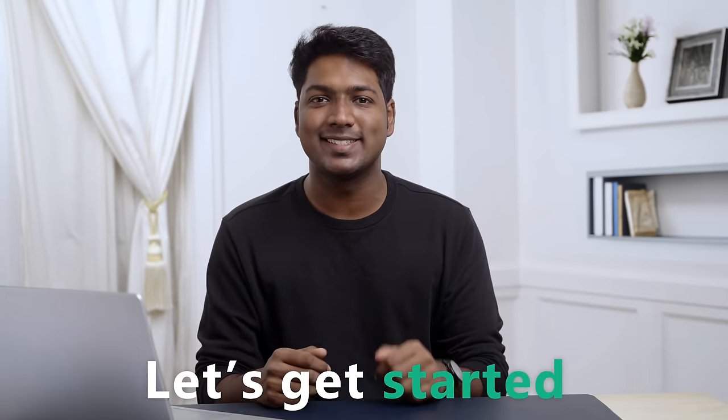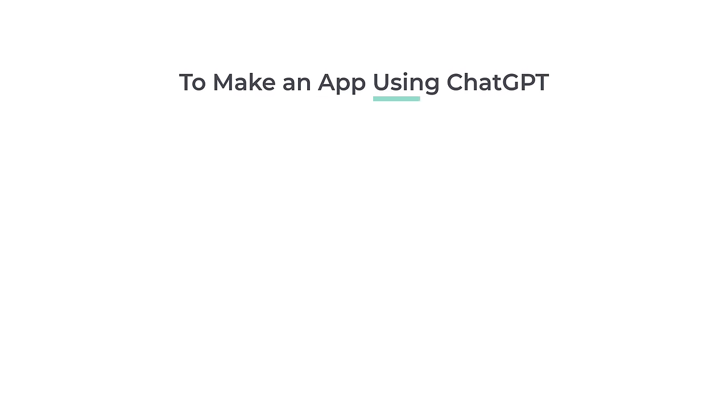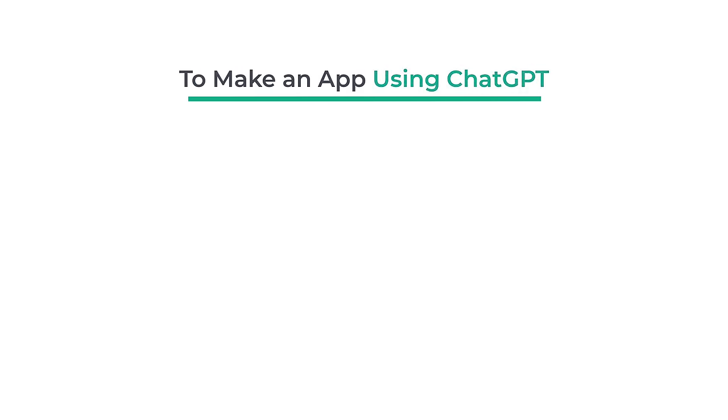I'm Brian from Website Learners, and let's get started. To make an app using ChatGPT, we are going to do four steps. First, decide what kind of app that you want to create.